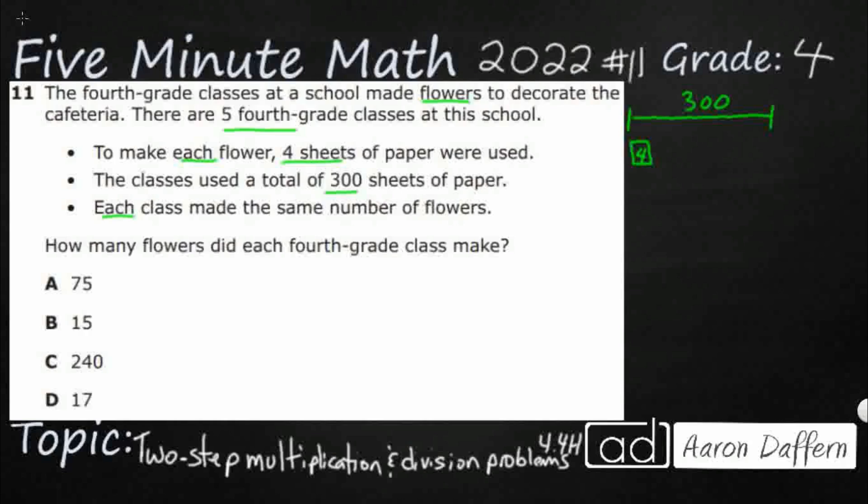So each, each, look at all those eaches. When you see each, all of those three eaches make you think equal groups. So when we're thinking equal groups, that's going to either be multiplication or division or possibly both. So I need four sheets of paper to make one flower. How many flowers can I make out of those 300 sheets?